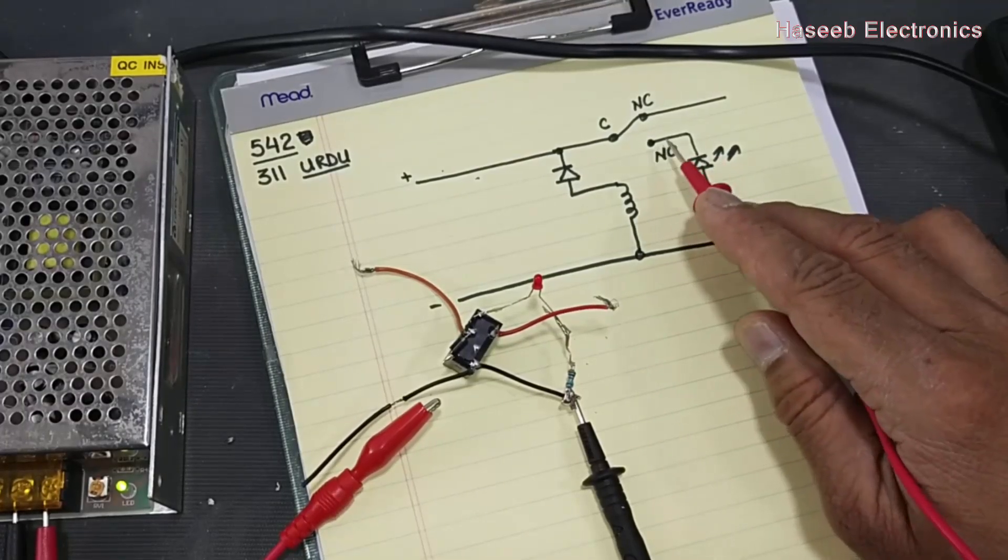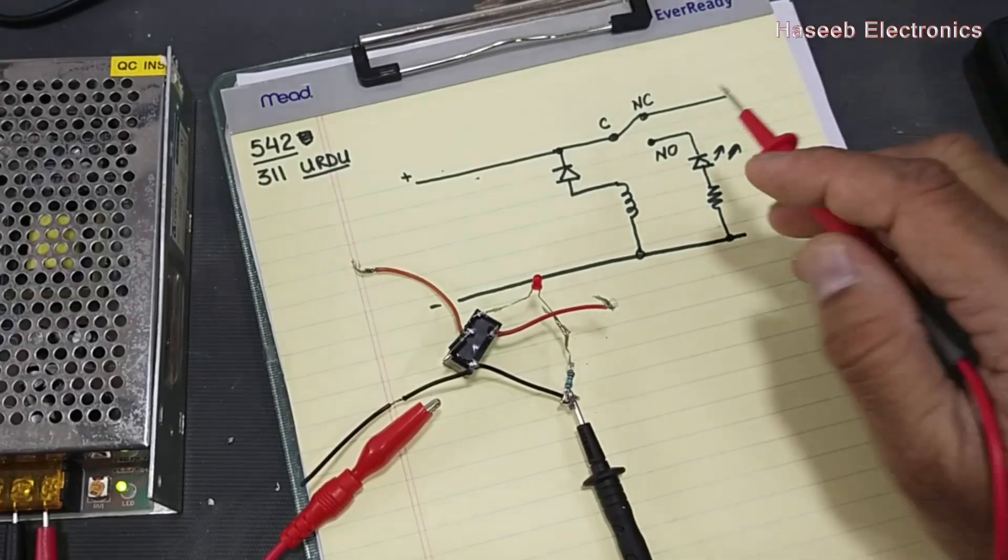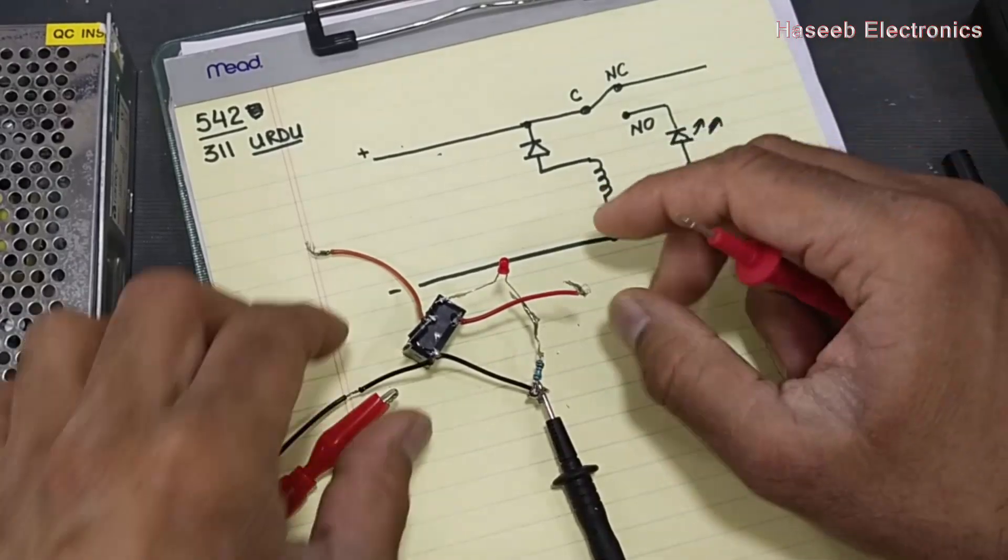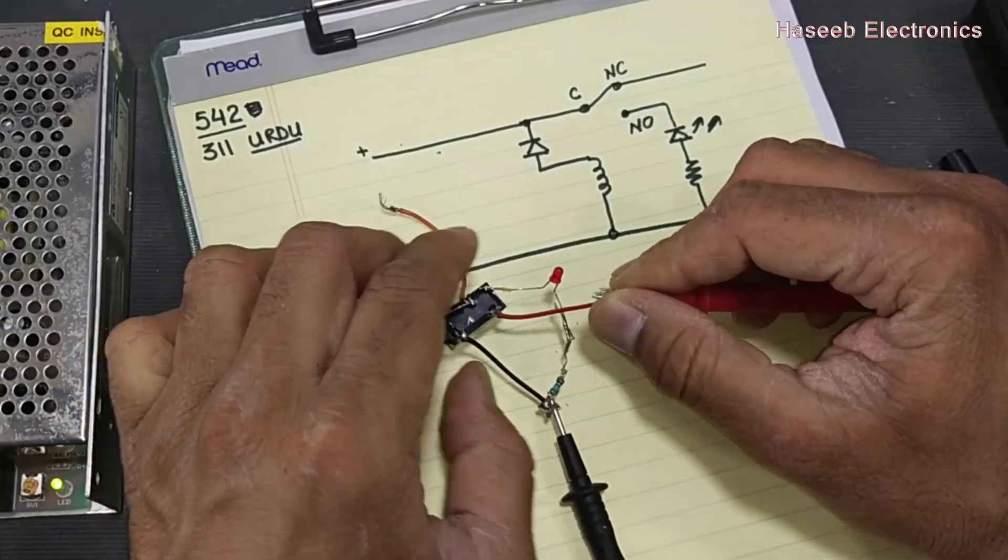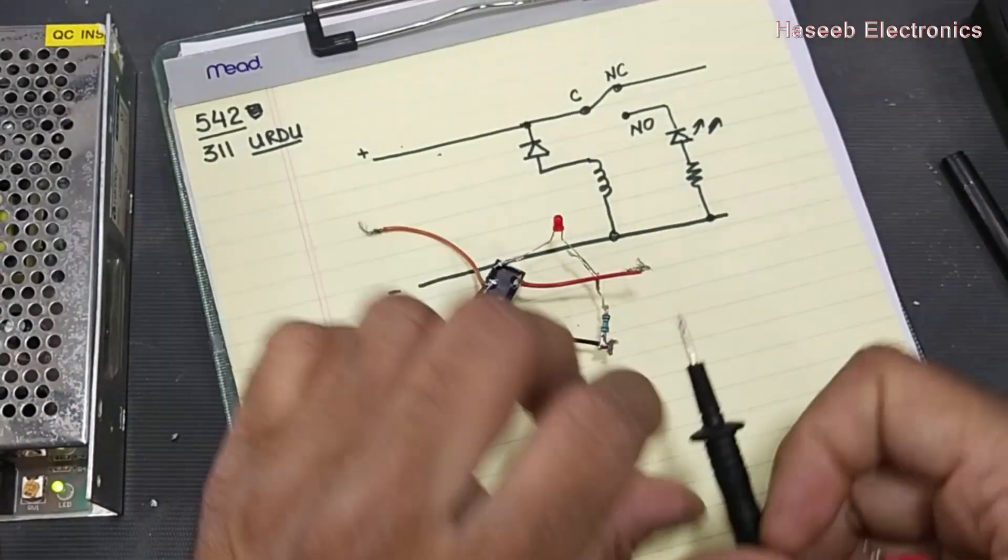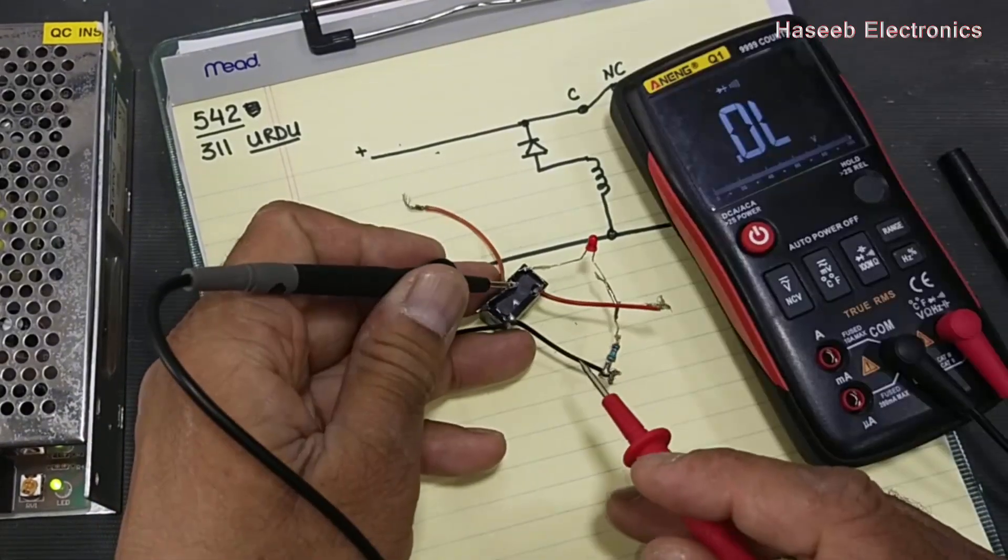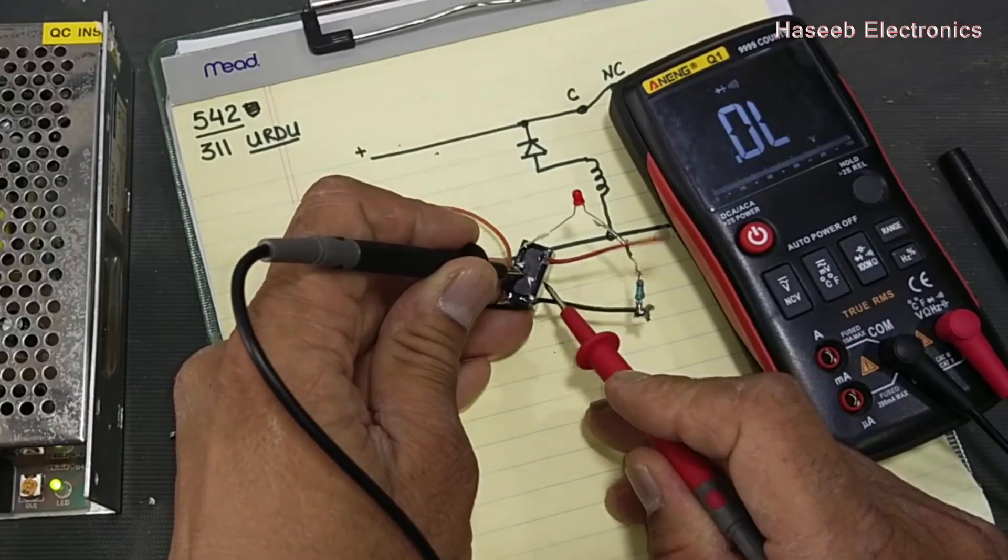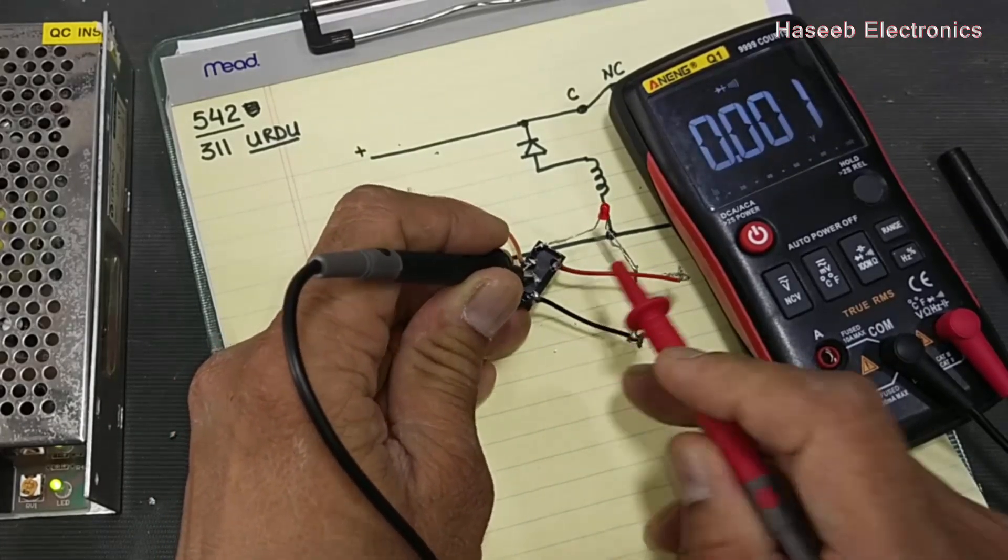This is our positive output side, which we are taking from the normally closed points. Where is the normally closed point? The relay common point and this terminal, when the relay is off, it is connected. Let's check it. This is the negative line and this line is the positive output terminal, which will connect it to the load.